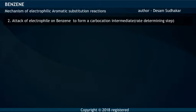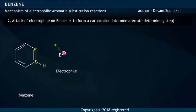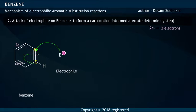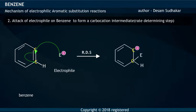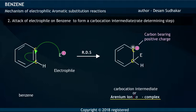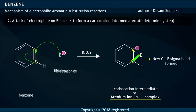Step 2: Attack of an Electrophile on Benzene. In the second step, the electrophile attacks the pi-electron cloud of the Benzene Ring, takes away two pi-electrons out of six pi-electrons, and forms a Carbocation Intermediate, also called the Arenium Ion or Sigma Complex. A new C-sigma bond is formed in the intermediate.